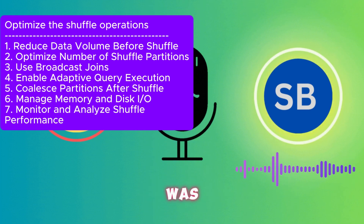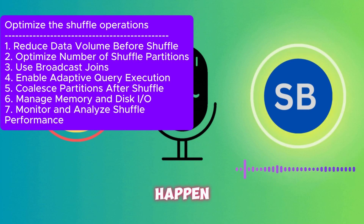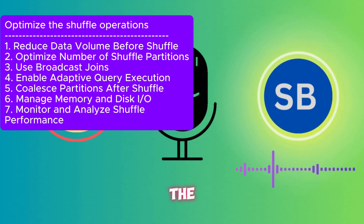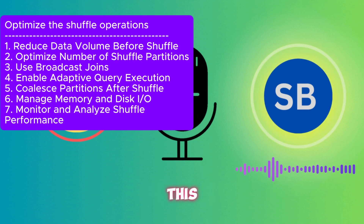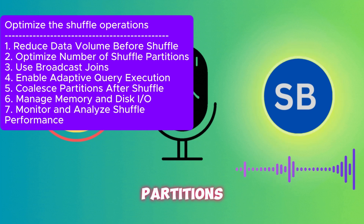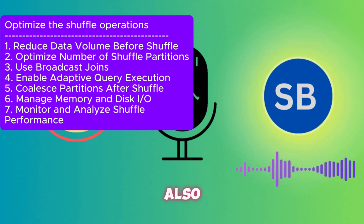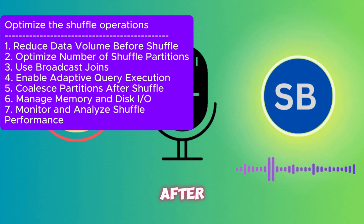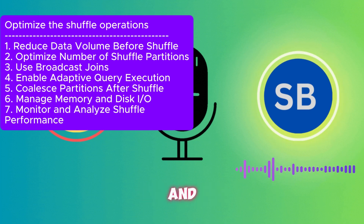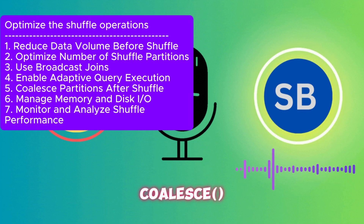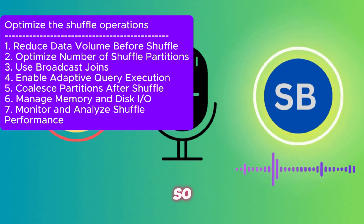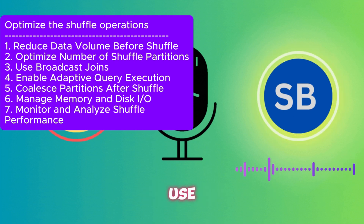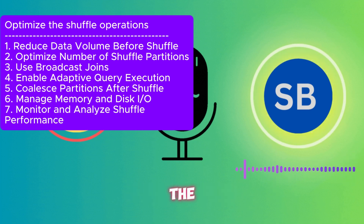All data is available local to each executor, so no shuffling is required for the join. We can also enable Adaptive Query Execution, available from Spark 3 onwards, which automatically adjusts the number of partitions pre-shuffle and post-shuffle with many other advantages. After shuffling, use coalesce rather than repartition if you need to reduce partitions — repartition triggers another shuffle, while coalesce does not.